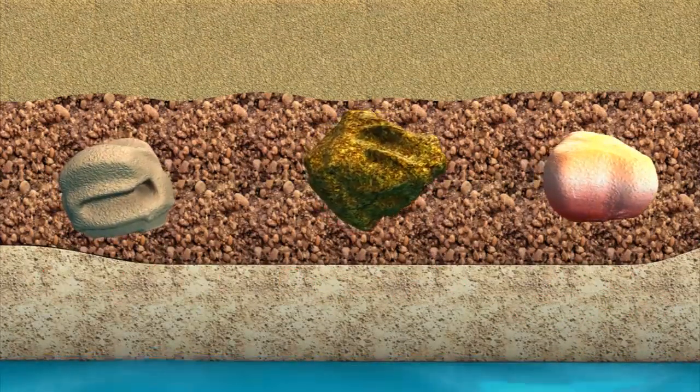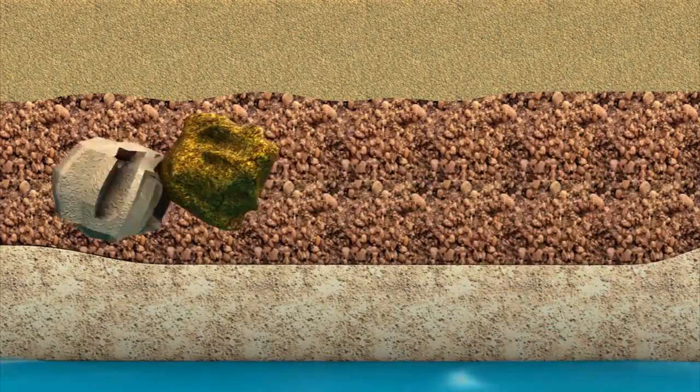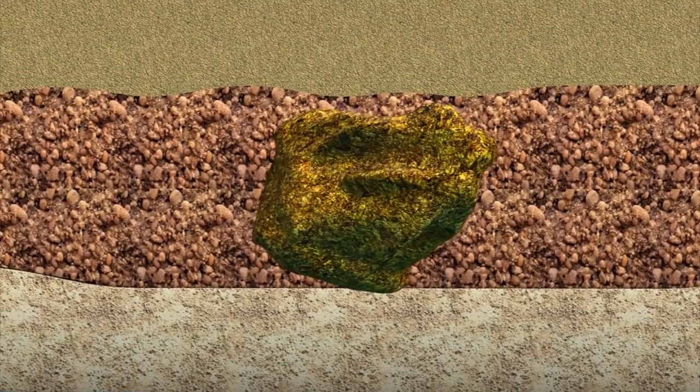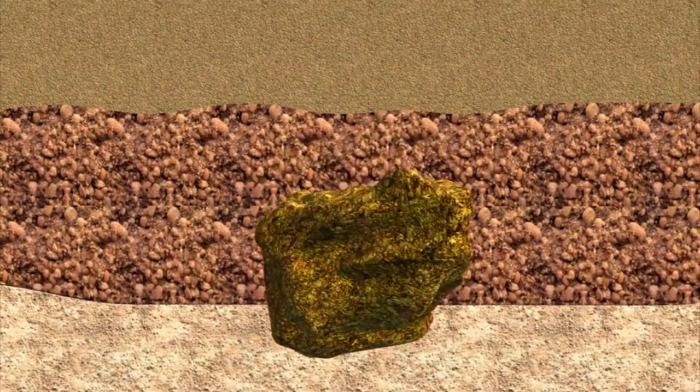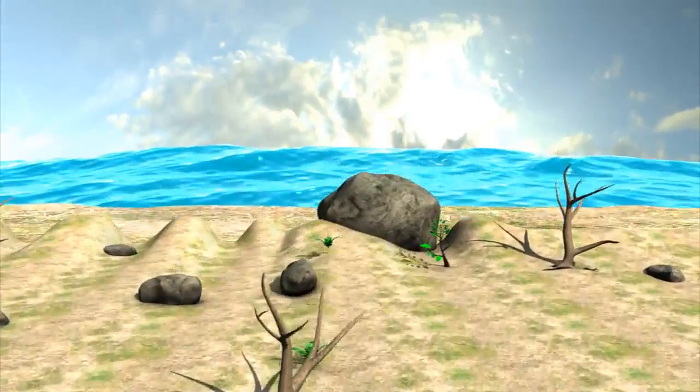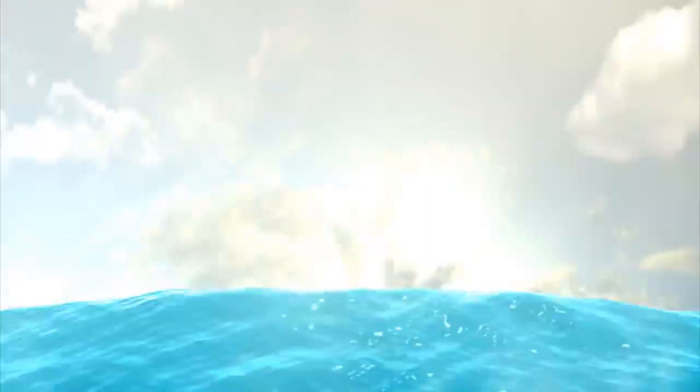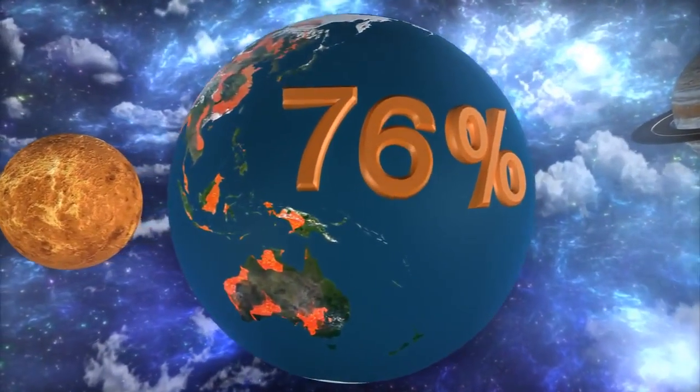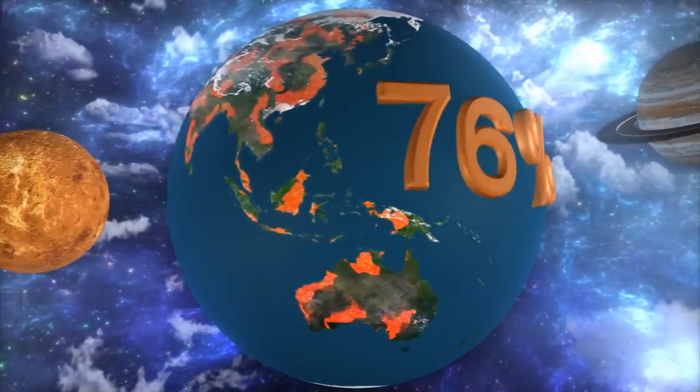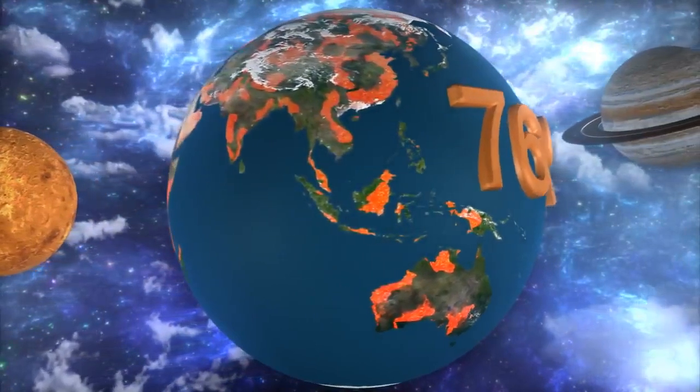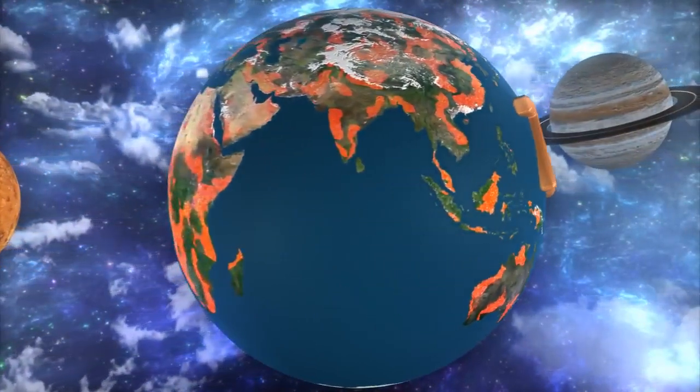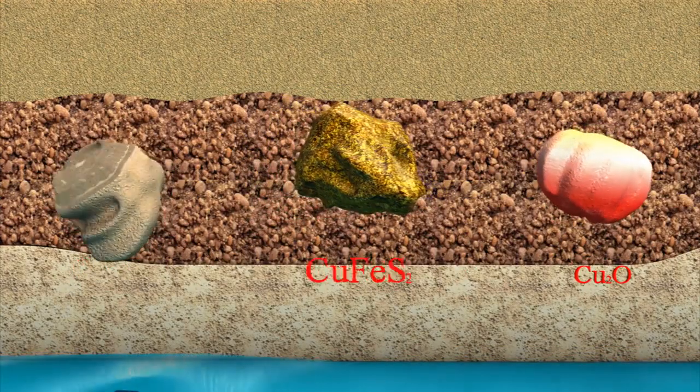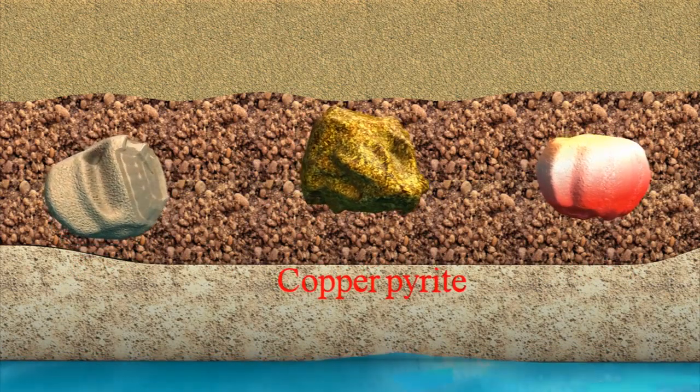Copper is mainly extracted from chief ore copper pyrites. It is nearly 76% world production copper. Now let's see how to extract copper from copper glance. The chief ore is copper glance.